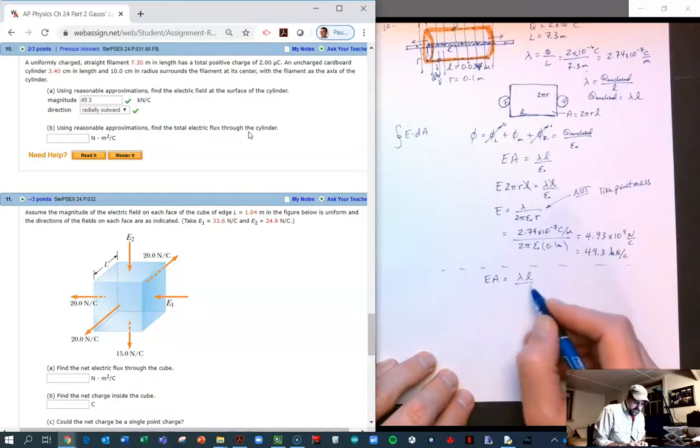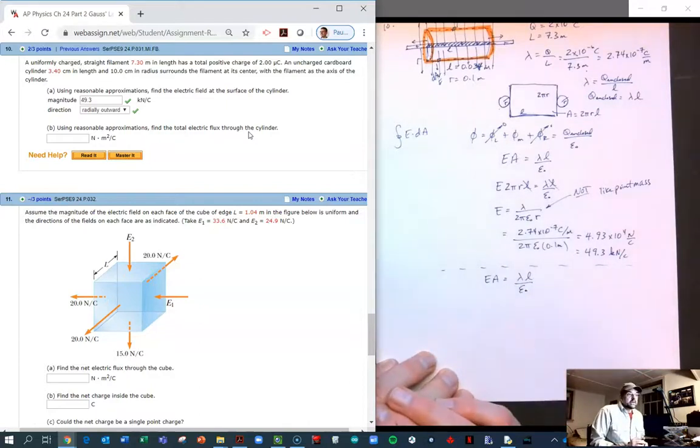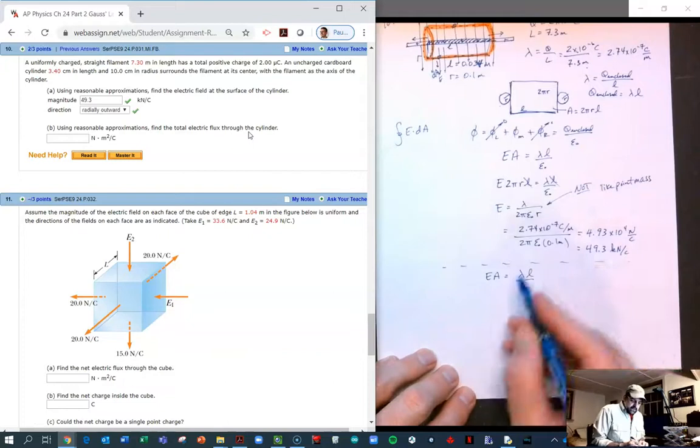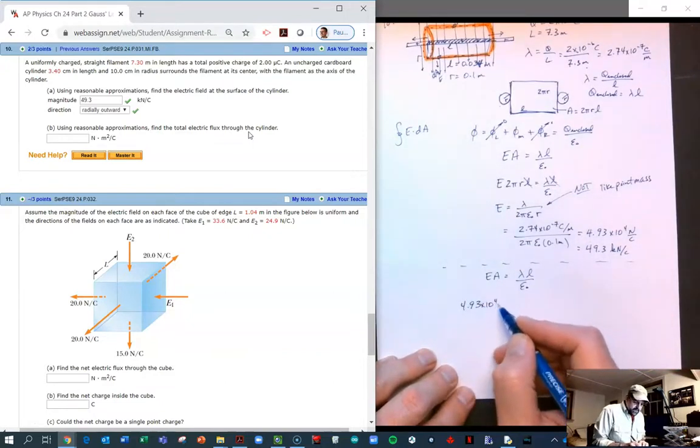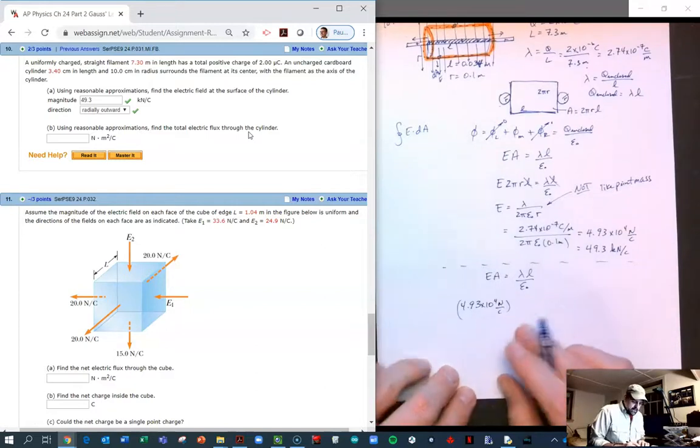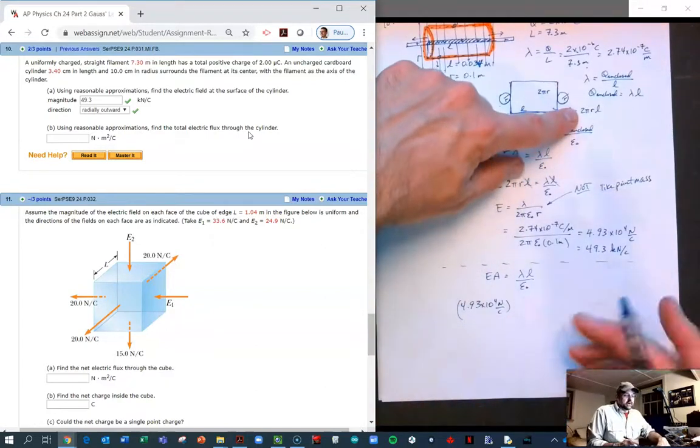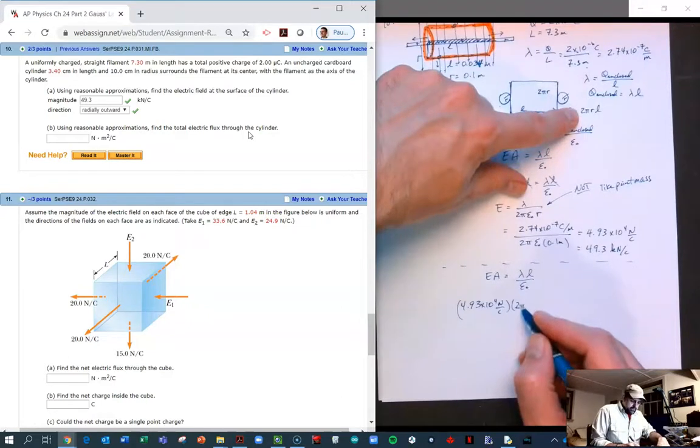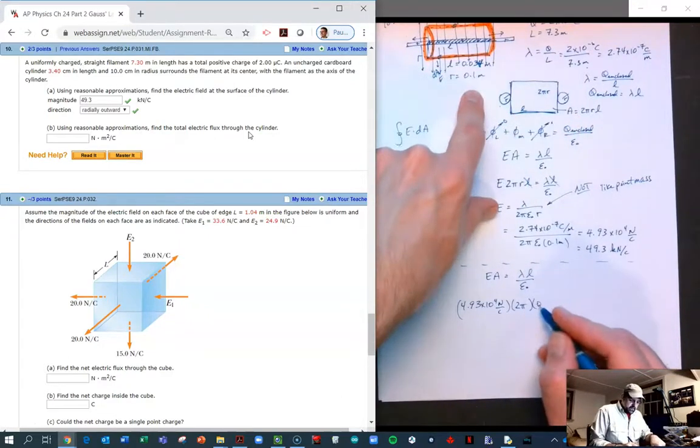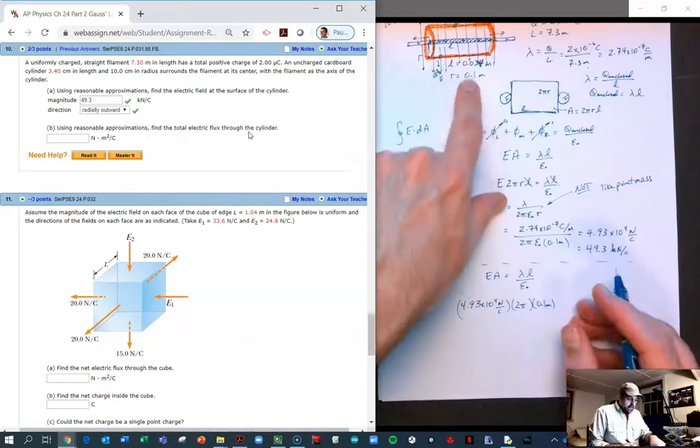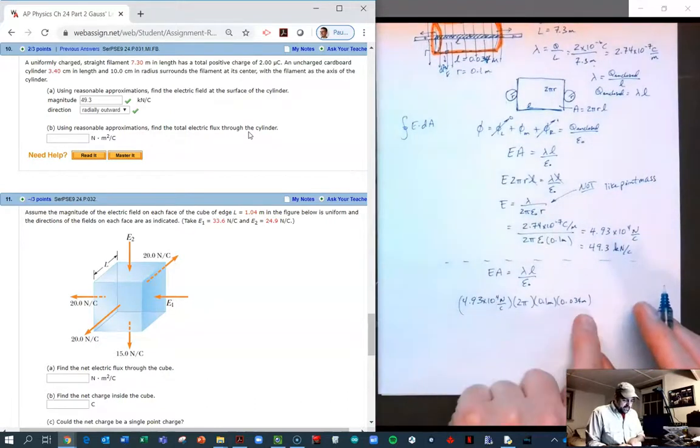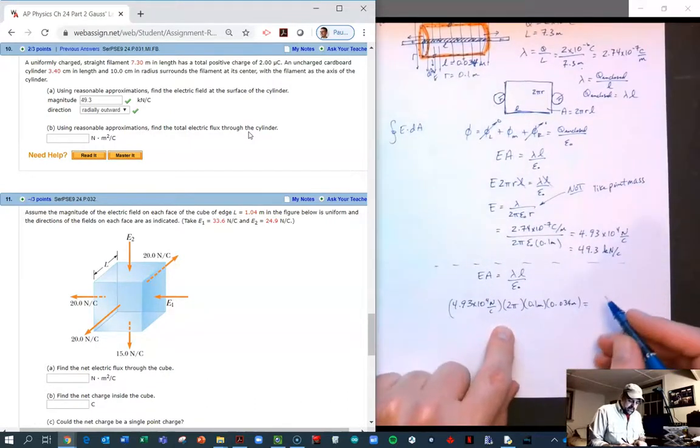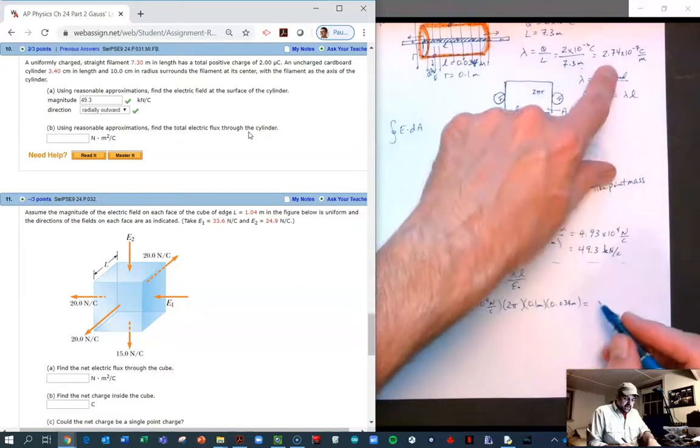I'll just write it down just for shakes. The electric field is 4.9 times 10^4. The area we know is 2πr where r is 0.1 meters, and l is 0.034 meters. Watch that zero there, so that's what the flux is on the left-hand side.